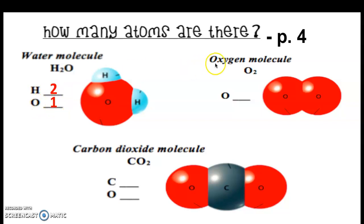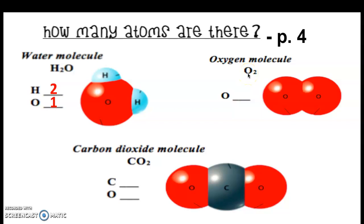In our next example, the oxygen molecule — this is our diatomic oxygen, where we have two oxygen atoms that are bonded together chemically. O2 is written out like this, so this is our element oxygen, and our subscript 2 applies directly to the oxygen atom in front of it. There are no other numbers or elements present, so we just have two oxygen atoms.